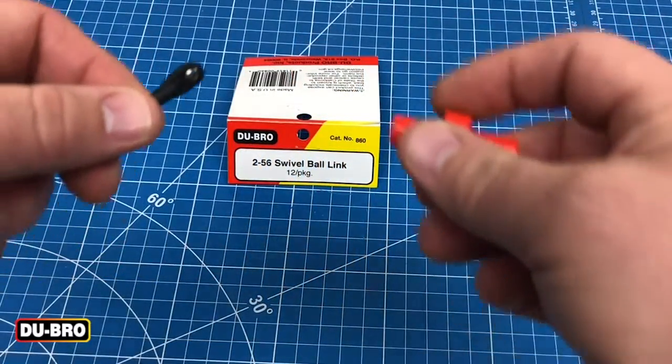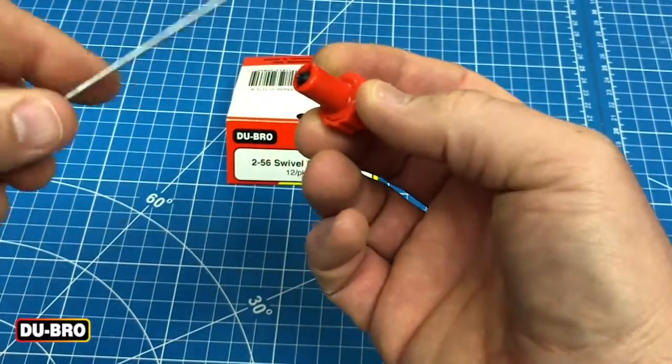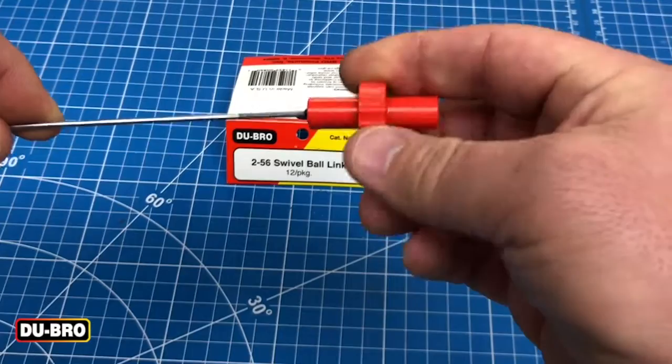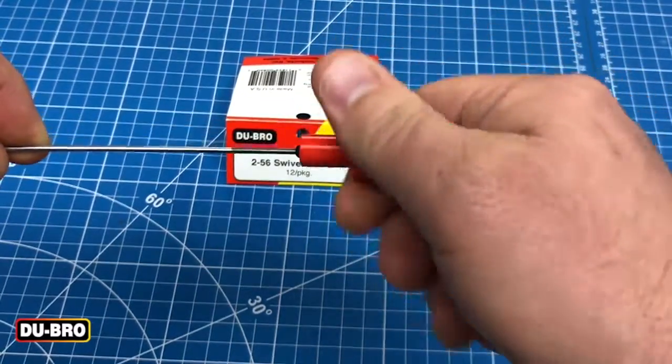The 256 swivel ball link is easily installed using a Dubro easy threader by slipping it inside the tool and screwing it directly onto your 256 threaded rod.